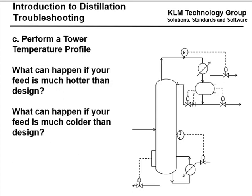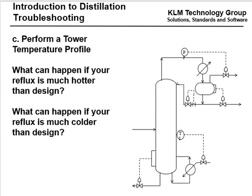What happens if your feed is much hotter than design? Normally we want the feed to be about 50% vaporized. If it's much hotter, it may be 100% vaporized and the few trays above the feed could be flooding. If the feed is much colder than design and all liquid, you could flood the few trays right below the feed. What happens if your reflux is much hotter than design? You want the reflux to come in, condense, cool the liquid on the tray, and go down the column. If it's much hotter, you can build up an artificial recycle around the top of the column and not have enough reflux. If your reflux is much colder than design, it can condense too much vapor and actually flood the top of the column.